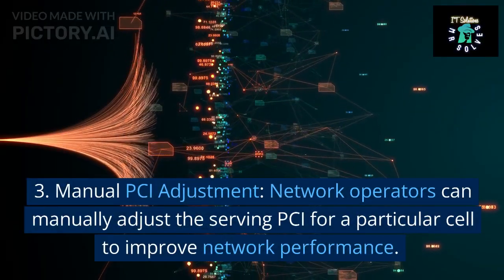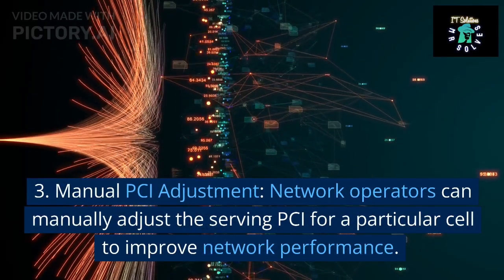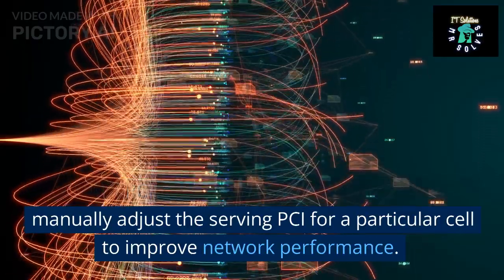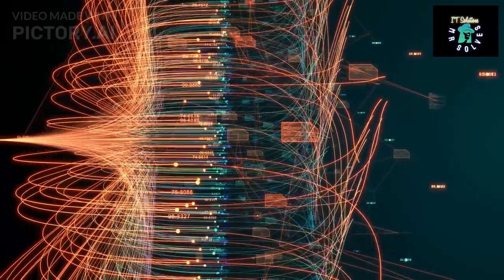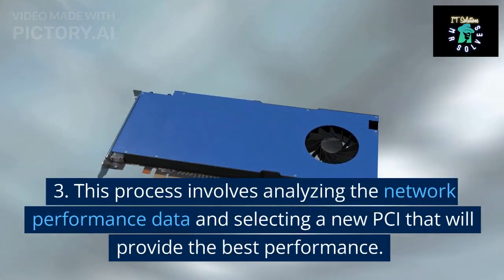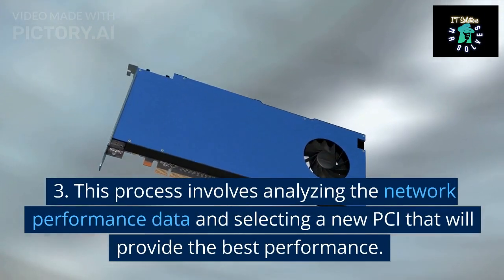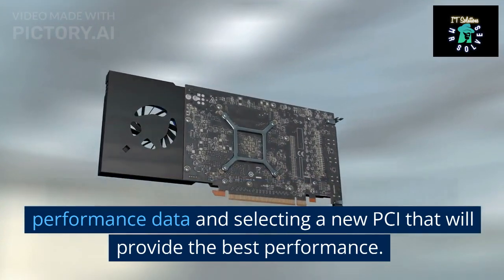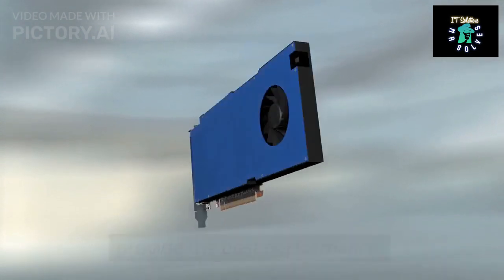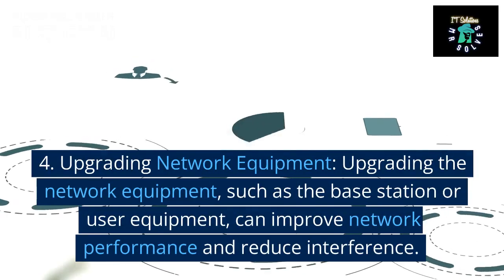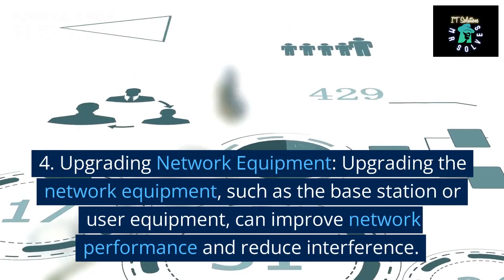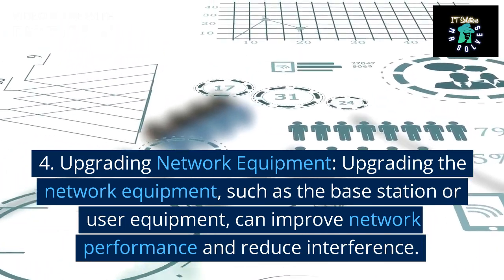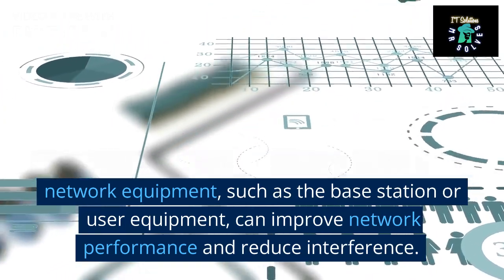Third, manual PCI adjustment: network operators can manually adjust the serving PCI for a particular cell to improve network performance. This process involves analyzing the network performance data and selecting a new PCI that will provide the best performance. Fourth, upgrading network equipment such as the base station or user equipment can improve network performance and reduce interference.